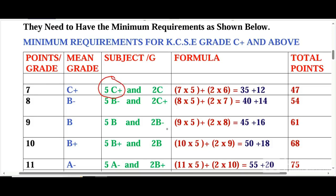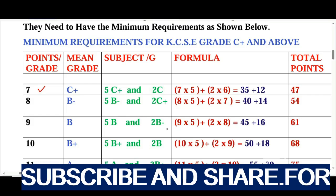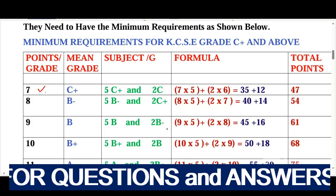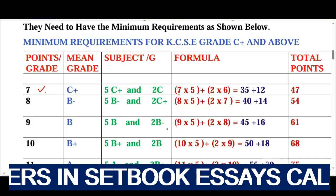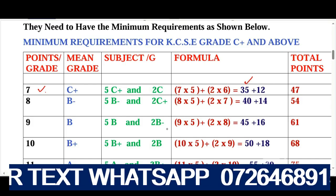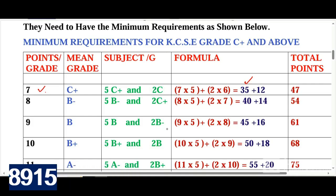If you have five C plus and two C plain, you will have a C plus overall — that is very important. So how do we calculate that? C plus has a grade point of seven. If you get five C plus: 7 times 5 equals 35 points. C plain has six points, so 6 times 2 equals 12. Adding 35 plus 12 gives you 47 points. 47 is the cut-off — that is the minimum requirement for you to join university.